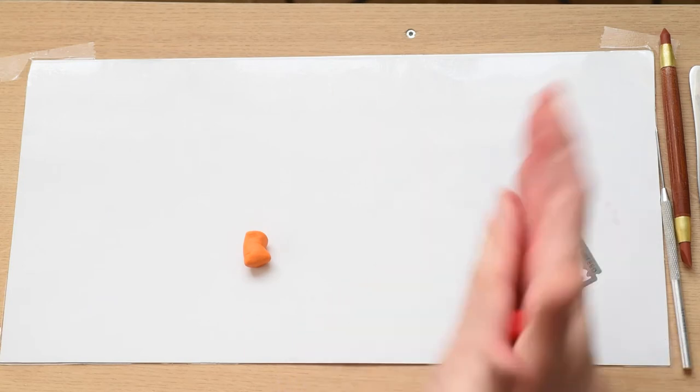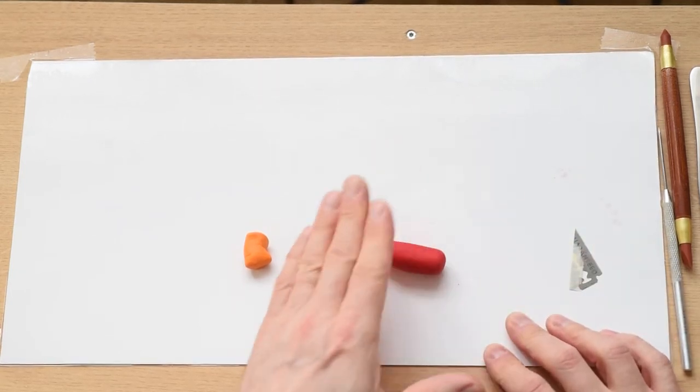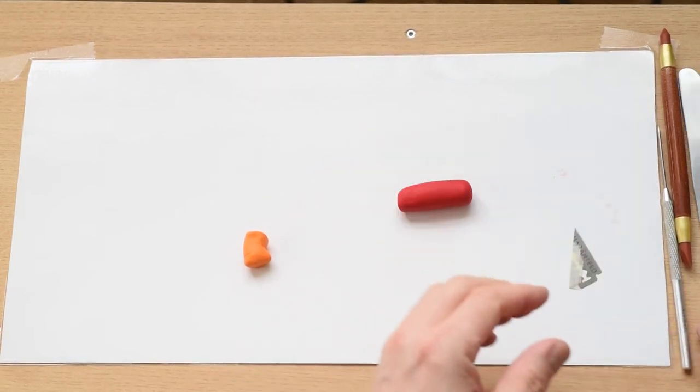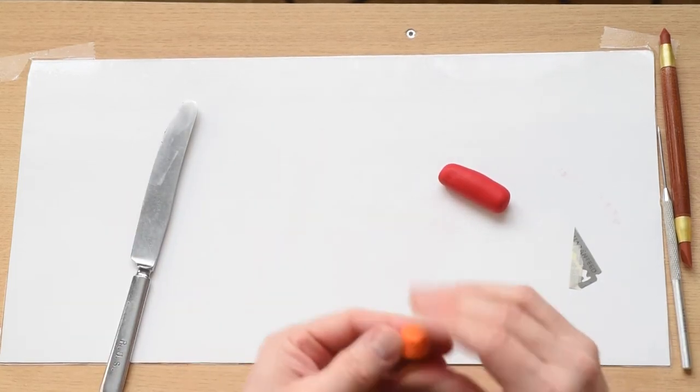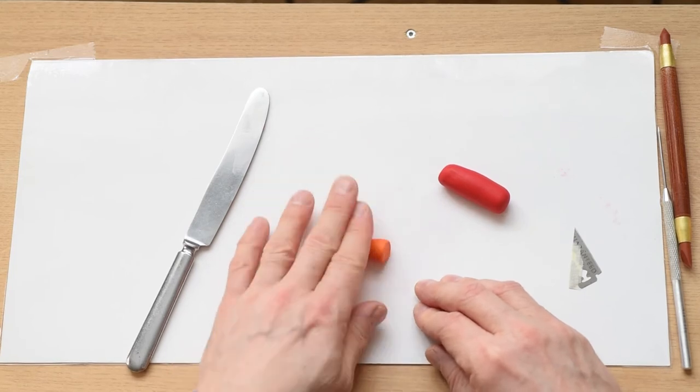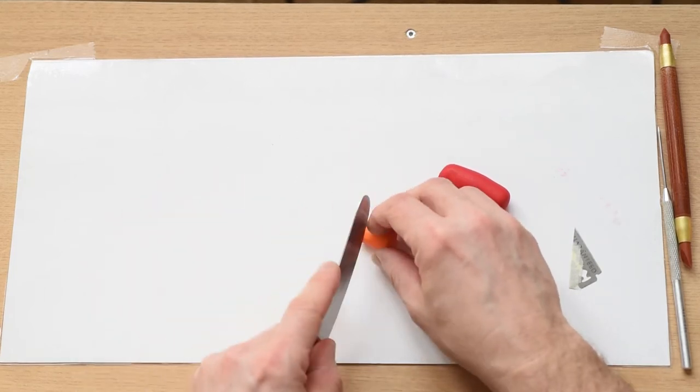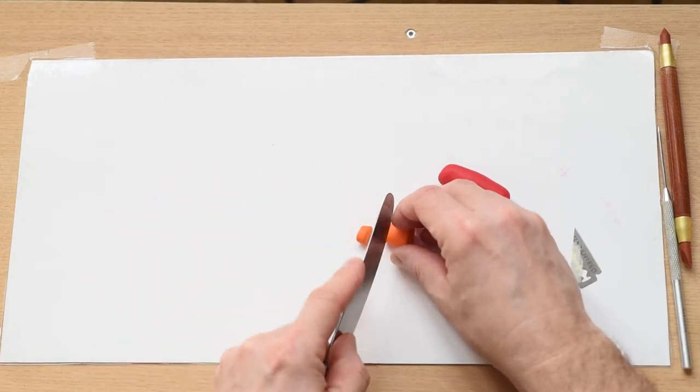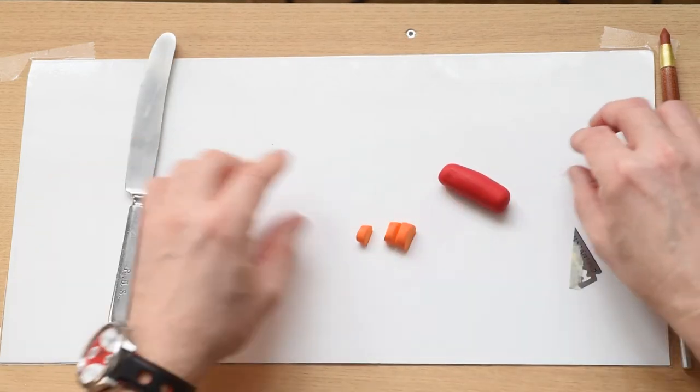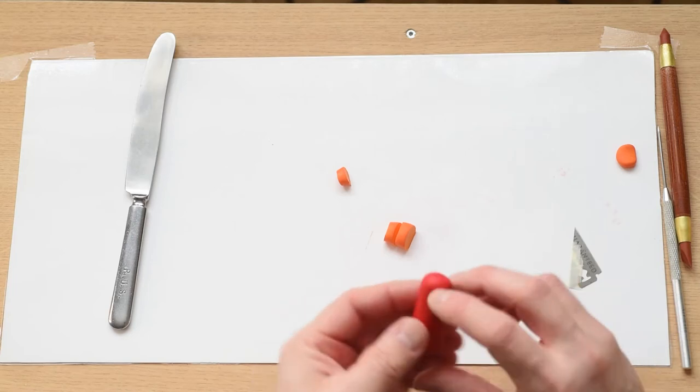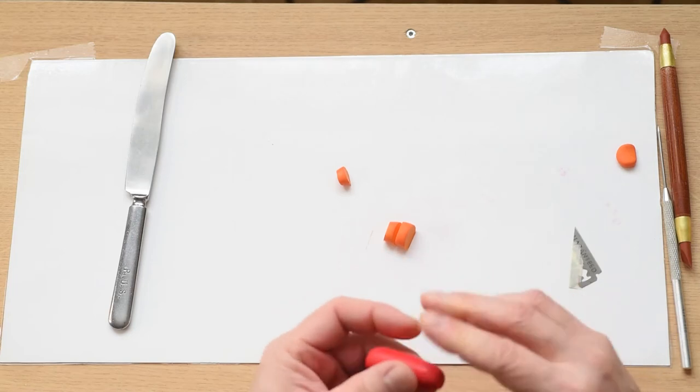What we need today is actually orange and red for the body, we need a little bit of white and black, and that's about it. I want to remind you that you should cover the table because otherwise the clay might just stain it.